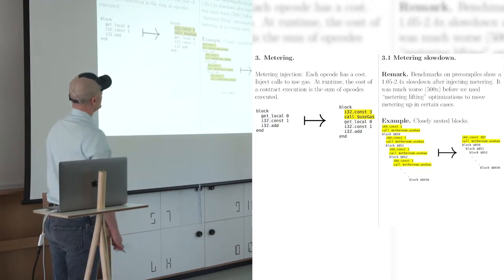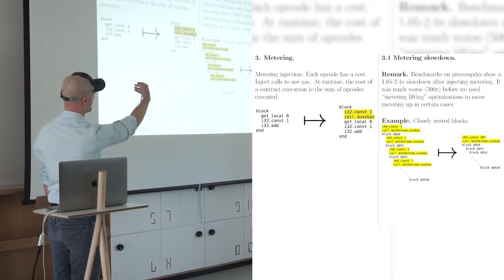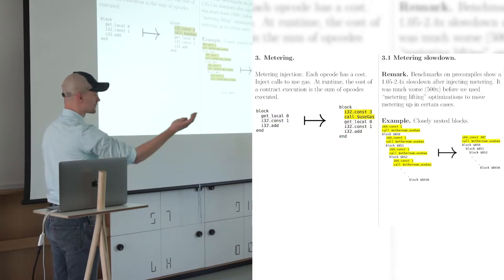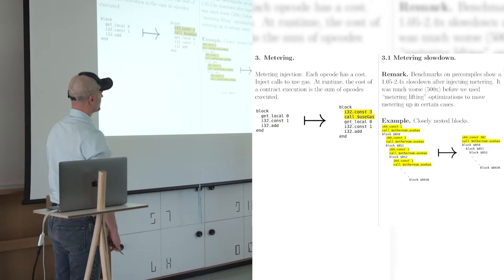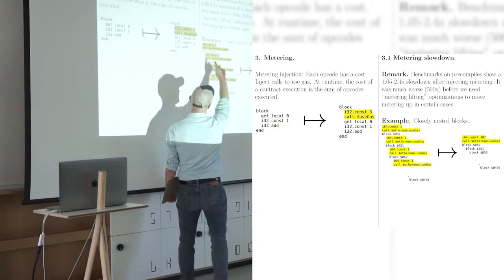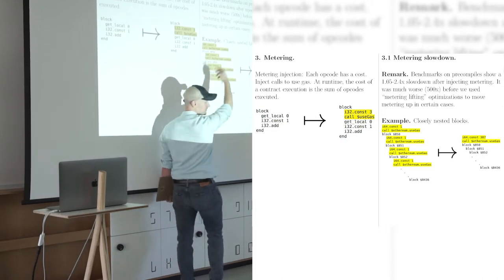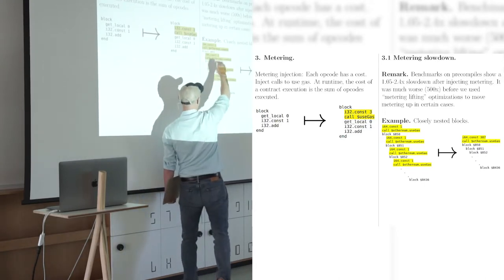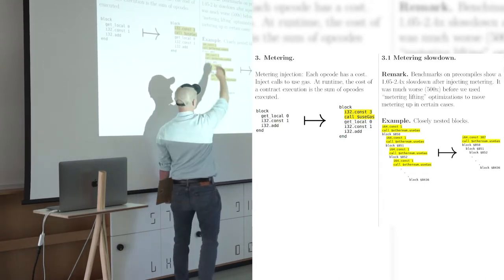So we did a bunch of benchmarks on precompiles and we got it down to oftentimes 1.5x slowdown for metering, sometimes very good, like approaching 1.05, approaching no slowdown, sometimes 2.4, but this was after a lot of work. Sometimes we had 500x slowdowns, for example, in this case, we had like 386 nested blocks and then each, and then this was in some sort of inner loop. So this constantly called use gas. It was just dominated. You can see it. And this was like, you know, three, this, I did a dot, an ellipsis. So this is just continuing. A lot of it.